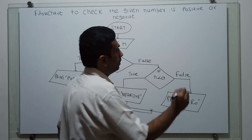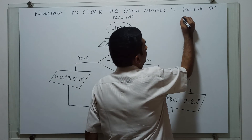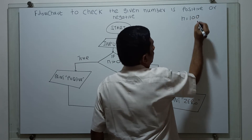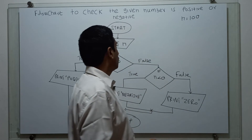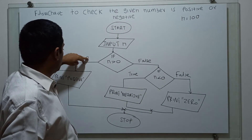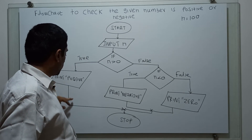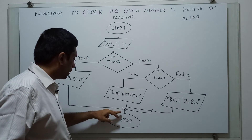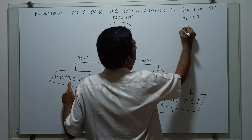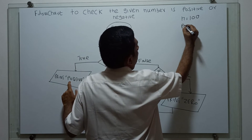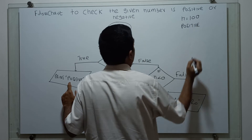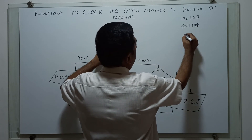Now we will give some sample input. For example, I am giving n equal to 100. n greater than 0 is true, so my output is positive. After that, the flowchart reaches the end — stop. My output is positive.